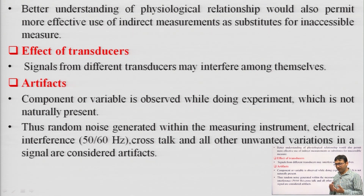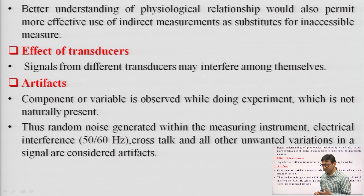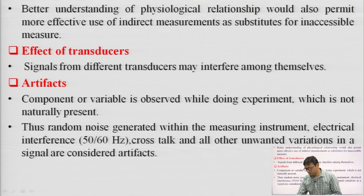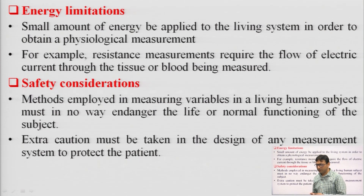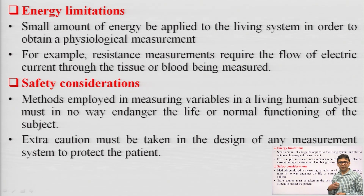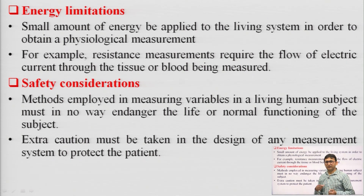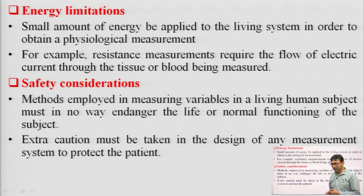The next challenge is variability of data. The data or biological parameters within the human body are very difficult to capture because the signal obtained at one instant may not remain the same at every aspect of time. For example, if I take parameters like temperature or blood pressure while sitting, they may be different when I am doing exercise or experiencing mental tension or some ailment.